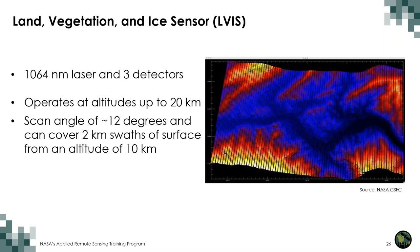Here are some specifications for LVIS. It has a 1064 nanometer laser and three detectors, and operates at altitudes up to 20 kilometers. It has a scan angle of about 12 degrees and can cover 2 kilometer swaths of surface from an altitude of 10 kilometers. The unique LVIS scanning system generates a pattern that evenly and completely samples the surface below, with approximately 100 beams across the 2 kilometer wide swath. Colors represent the surface elevation, with blue being low and yellow-white being high. The slight undulations at the top and bottom edges are a result of aircraft roll.